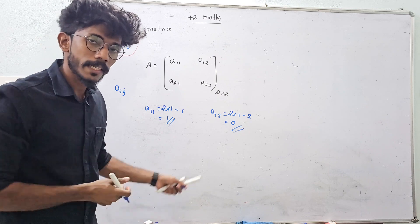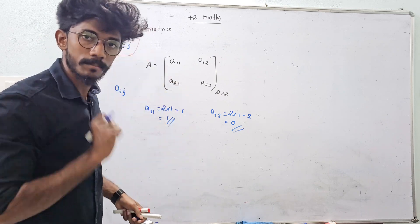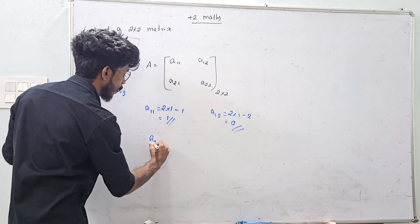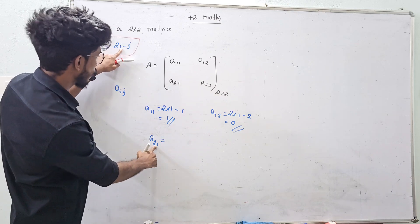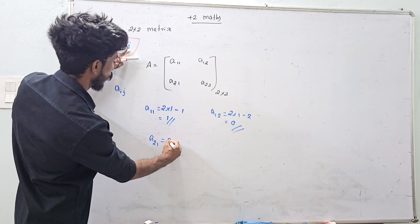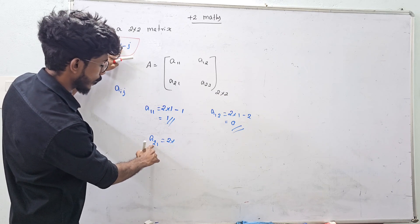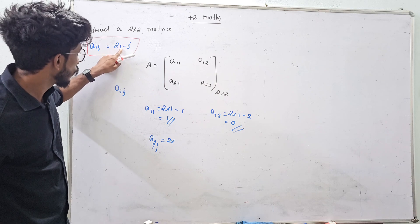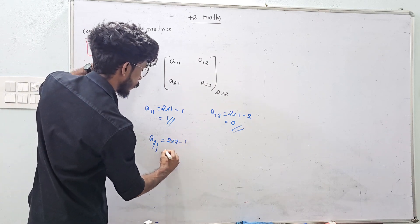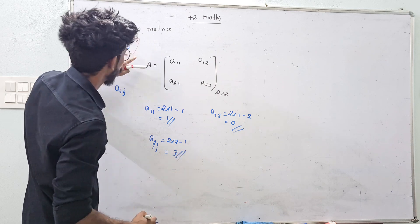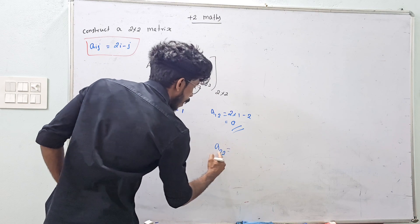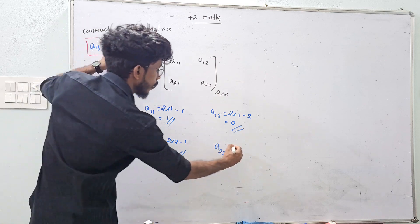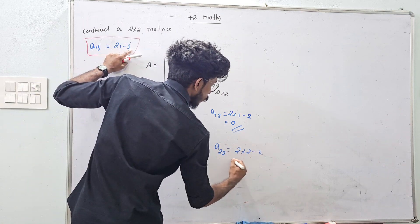You can use a calculator to get your answer. A(2,1): i is equal to 2, j is equal to 1 — 2 into 2 minus 1, so 4 minus 1 is 3. A(2,2): i equal to 2, j equal to 2 — 2 into 2 minus 2, so 4 minus 2 is 2.